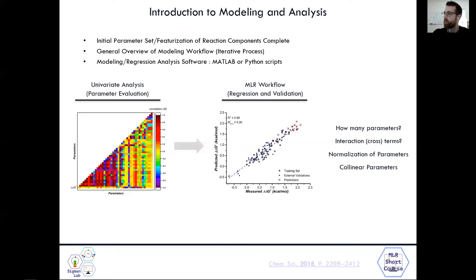So we often start with a univariate analysis, which is really the initial evaluation of our parameter set to get an idea of how the parameters are related to one another, how correlated they are to one another, and how they correlate to our output, which in this case is Delta G.